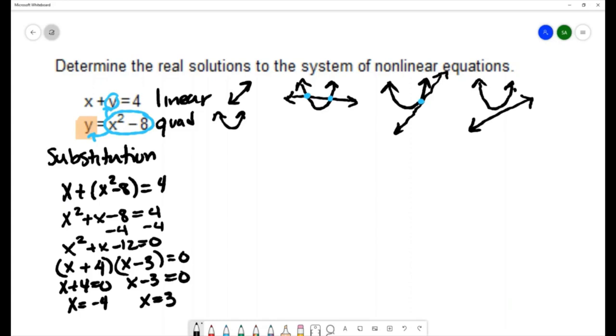Now those are solutions to the equation that we have here, not solutions to the overall system. Solutions to the system should be ordered pairs, so we have the x coordinate of one solution and the x coordinate of another solution. We still need to find the y coordinate.